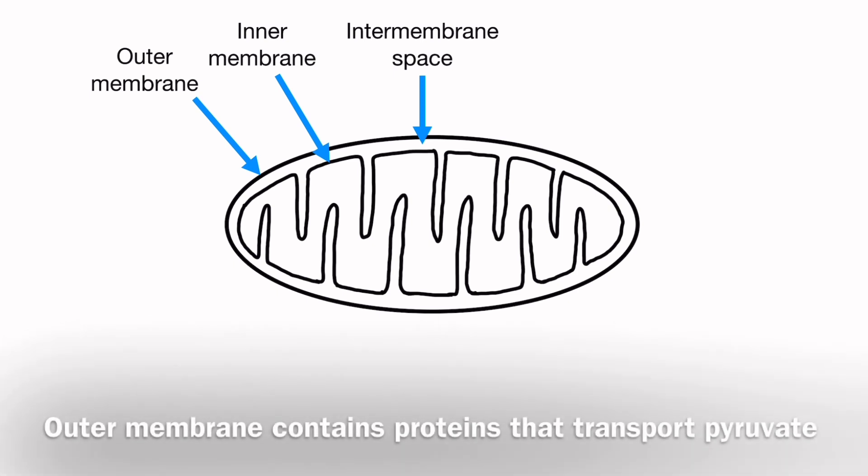Specifically, the outer membrane has proteins that are involved in transporting pyruvate from the cytoplasm into the mitochondrion. Pyruvate is an intermediary chemical in the process of respiration that you will learn about when you study this process in detail.